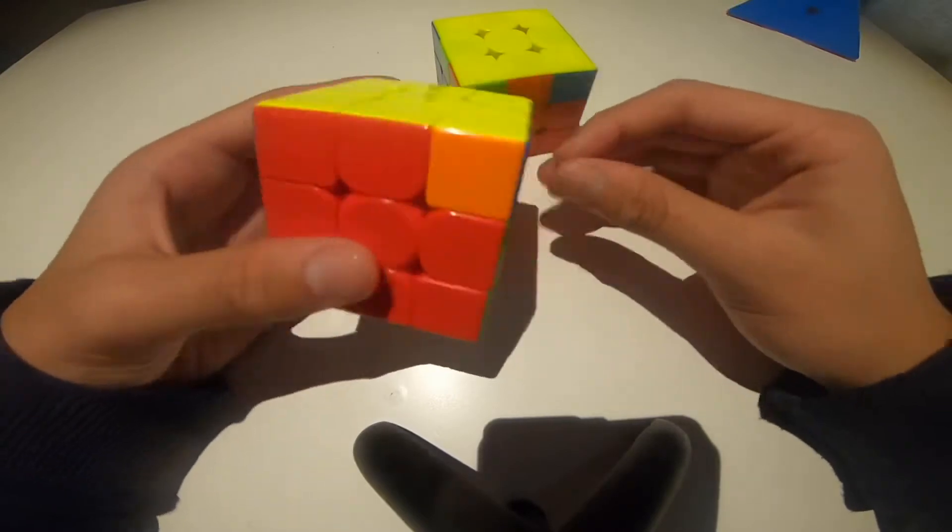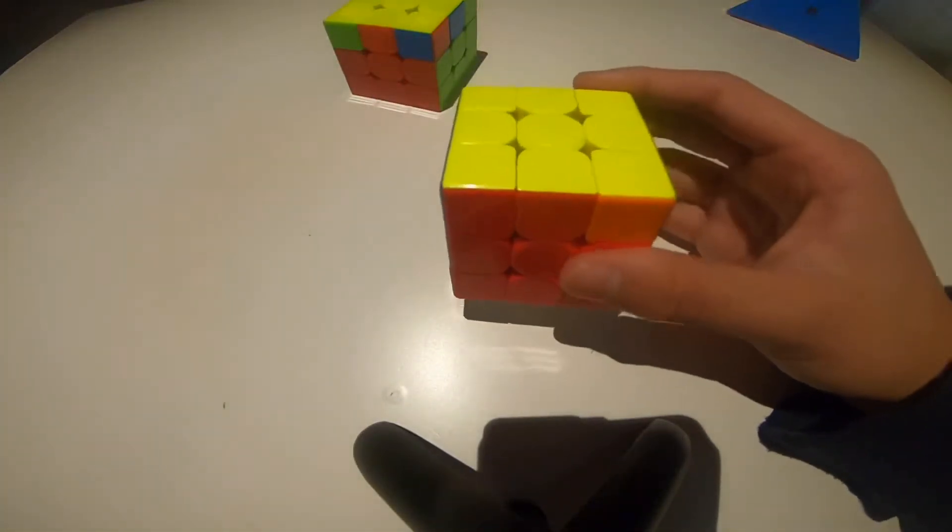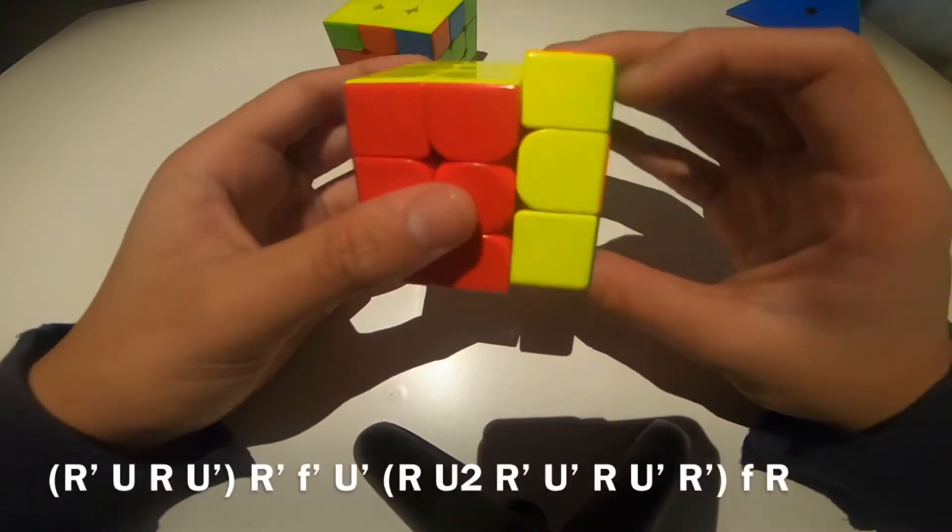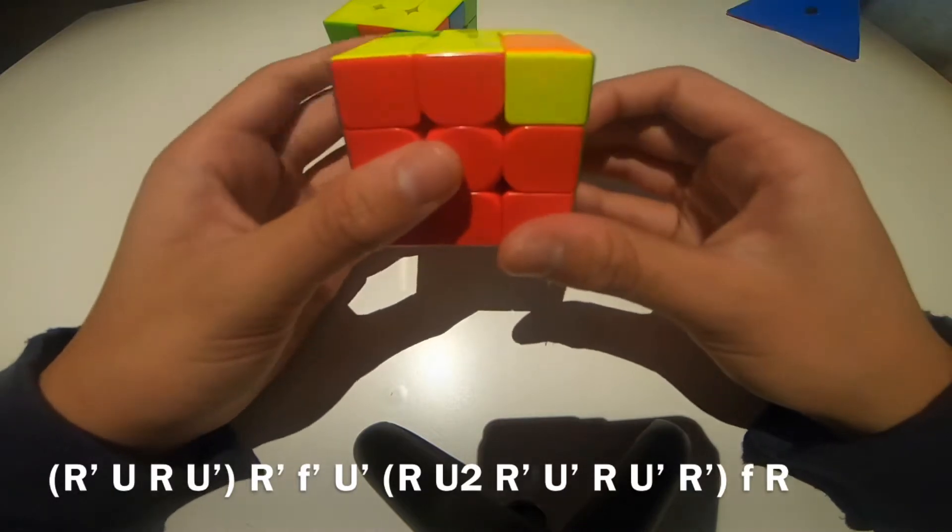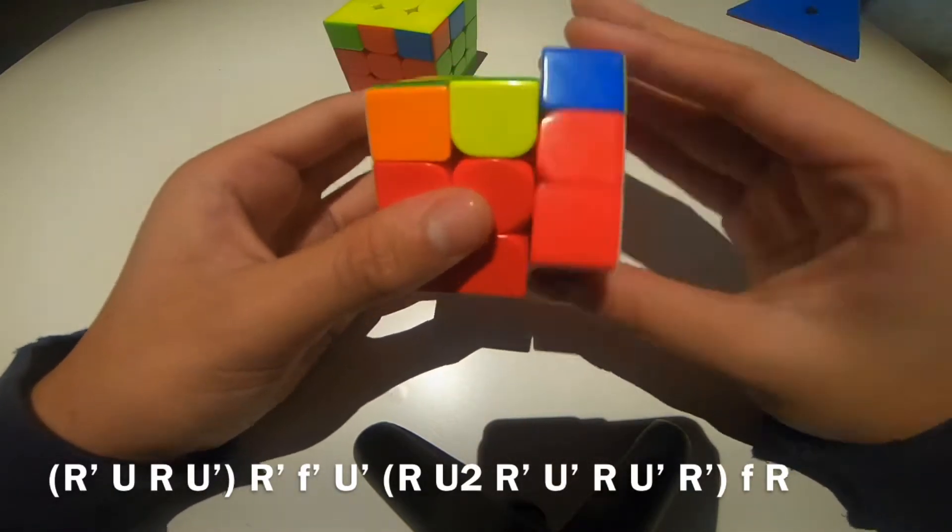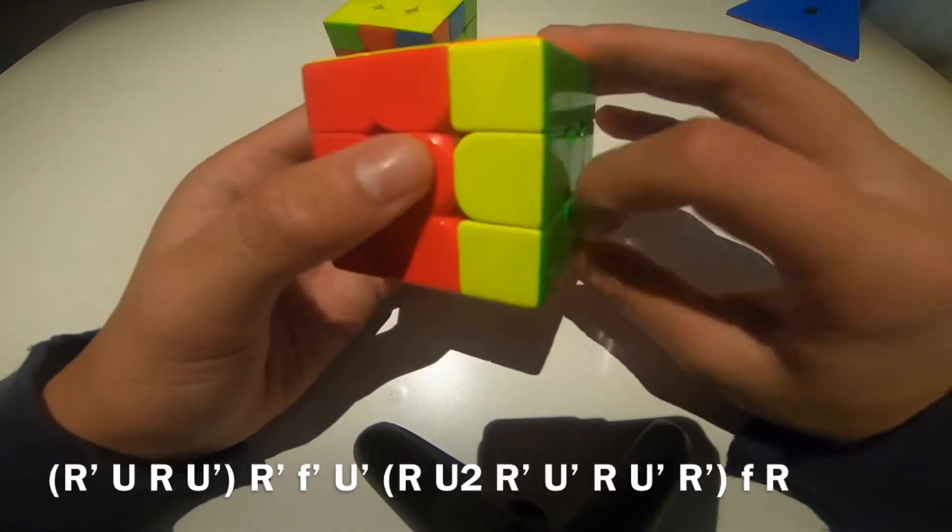And the last one. So here's a V-perm that was discovered recently. I don't use this, but it's a pretty interesting algorithm. So you do R' inverse sexy, R', wide F', U', anti-soon, wide F R.